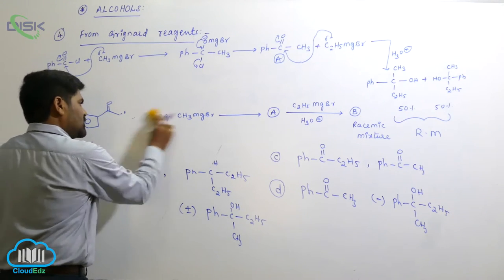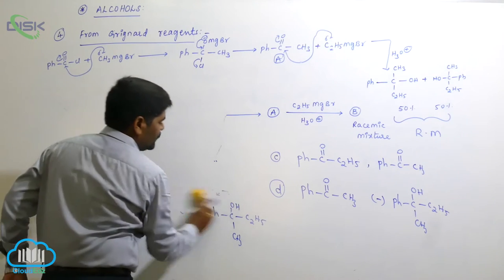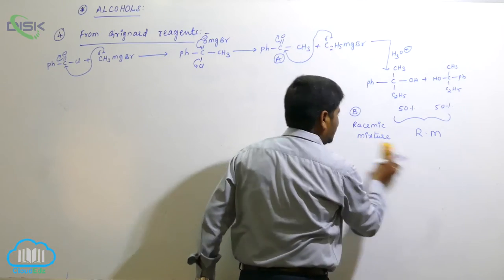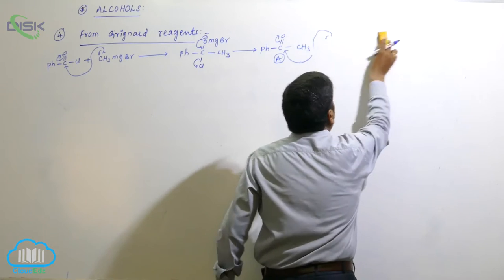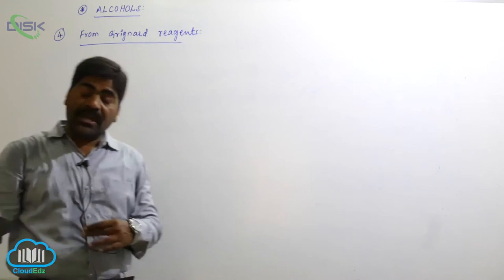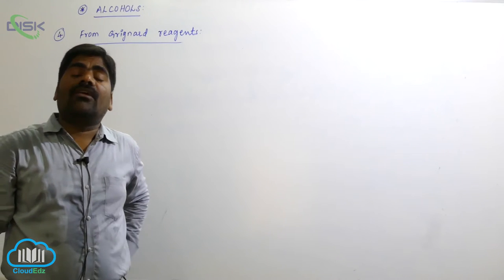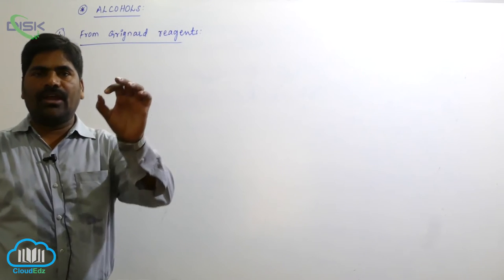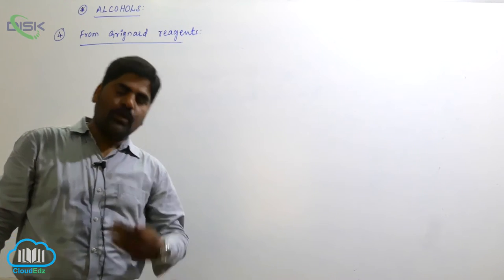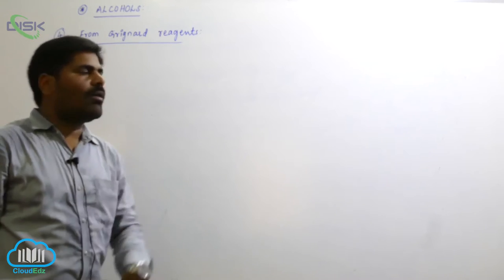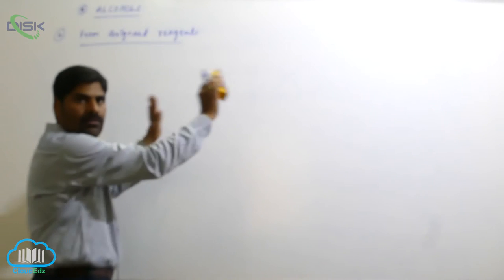Summary: Using Grignard reagents with carbonyl compounds prepares 1°, 2°, and 3° alcohols. Using acid esters and acid chlorides with Grignard reagents prepares only tertiary alcohols. Grignard reagents are very useful synthetic organic compounds.